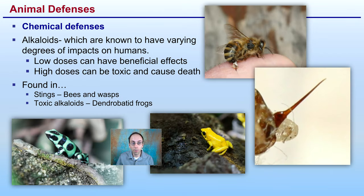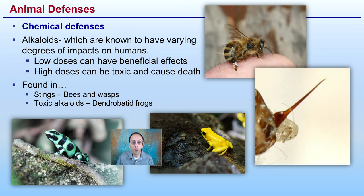There are also other chemical defenses. Alkaloids are known to have a varying degree of impacts on humans — low doses can have beneficial effects, while high doses can be toxic or even cause death. Alkaloids can be found in the stings of bees or wasps, which can be deadly to some people but may have potential medical benefits in low doses for others. We also see toxic alkaloids in these very brightly colored frogs.